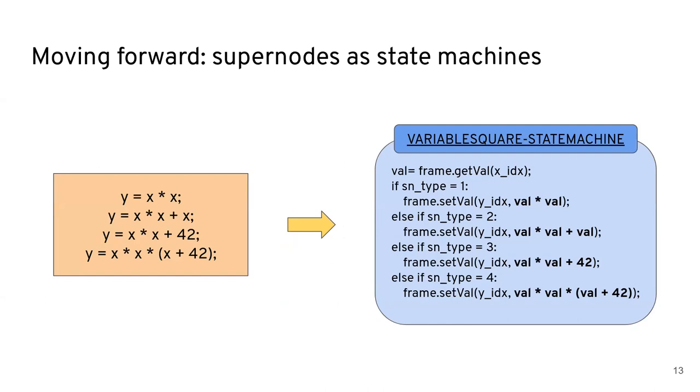So for example, if we have a code base where we have these four instructions on the left. So y equals x times x, another one is x times x plus x, and all four are fairly similar. So our intuition was like, why couldn't we just implement them into a single super node? So what this looks like is a local variable square state machine,